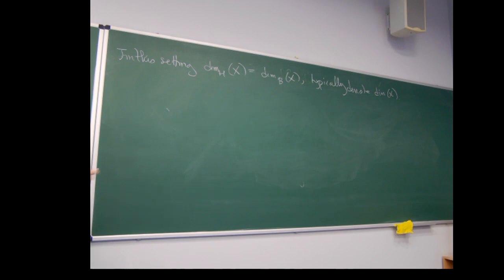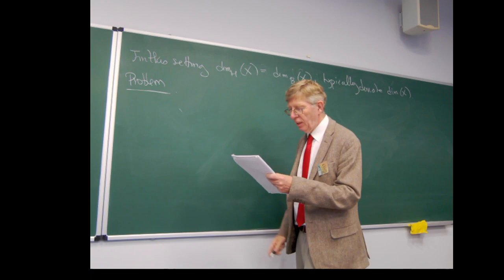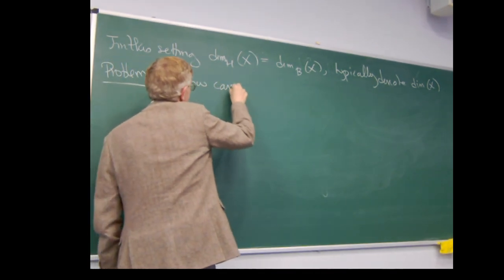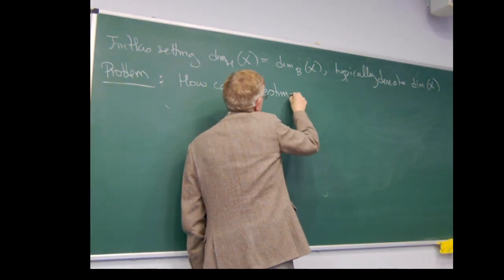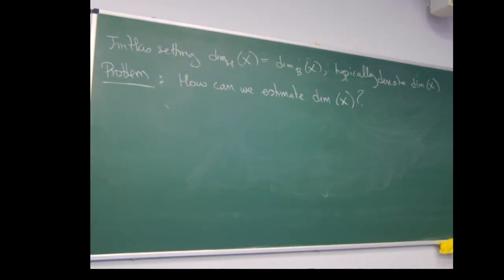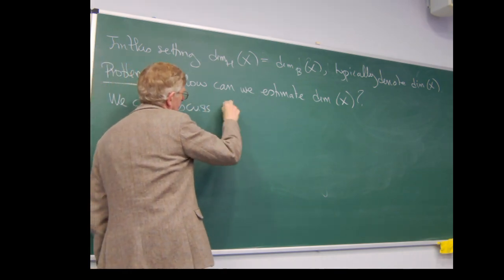And so we're back to the usual problem, the one that I stated at the beginning. Given this setup, a bunch of contractions, a compact set at the end, how can we estimate its dimension, sort of numerically? So how can we estimate the dimension of X? And I want in the course of these precious minutes all spent together, I want to describe three different approaches. Not in great detail, but at least say something about them. So we can discuss three approaches.